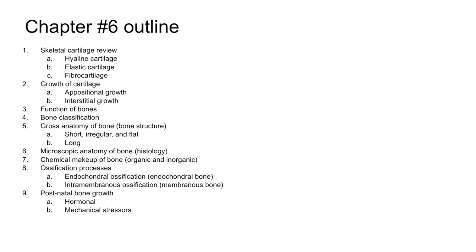In this week's two-part lecture over chapter six, we'll first review cartilage — focused on hyaline cartilage and fibrocartilage, with a quick review of elastic cartilage as well. Next, we'll consider how cartilage grows: appositional growth from the perichondrium, and interstitial growth from chondrocytes within cartilage. With that introduction to cartilage, we'll move on to bone function, bone classification by shape, and then gross anatomy of bone.